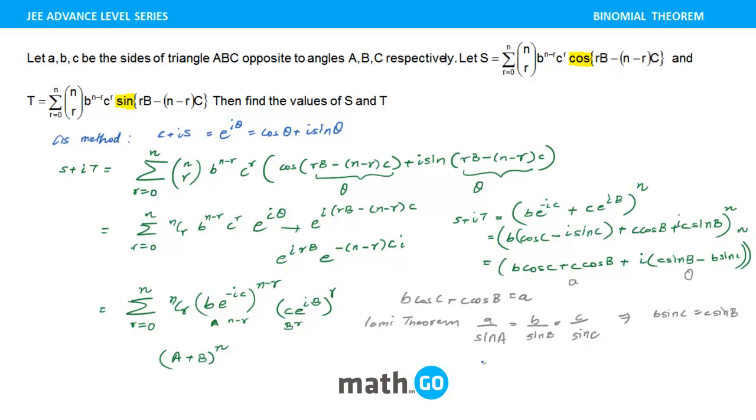So the entire S plus iT reduces to A raised to the power n. So there is no imaginary term. Our answer for T is 0, and for answer of S is nothing but A raised to the power n. So I hope the question is clear.